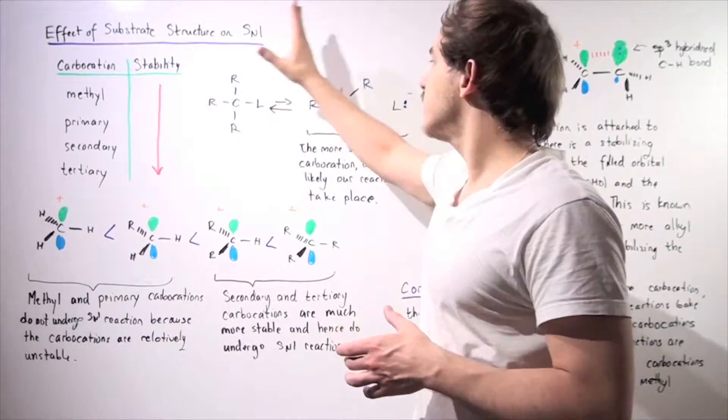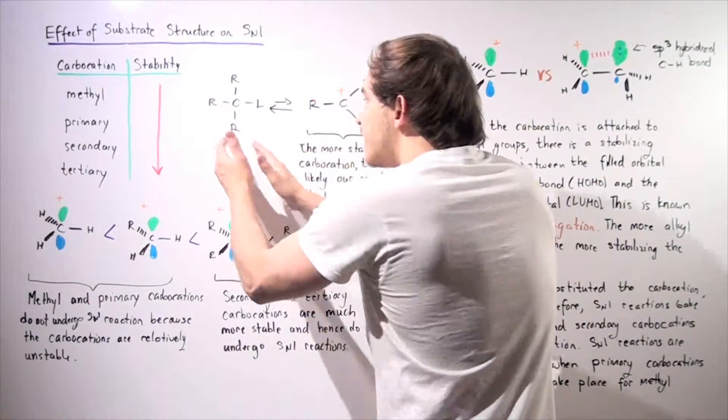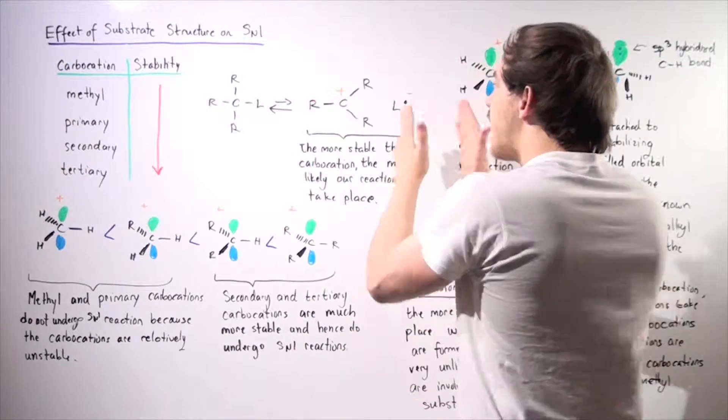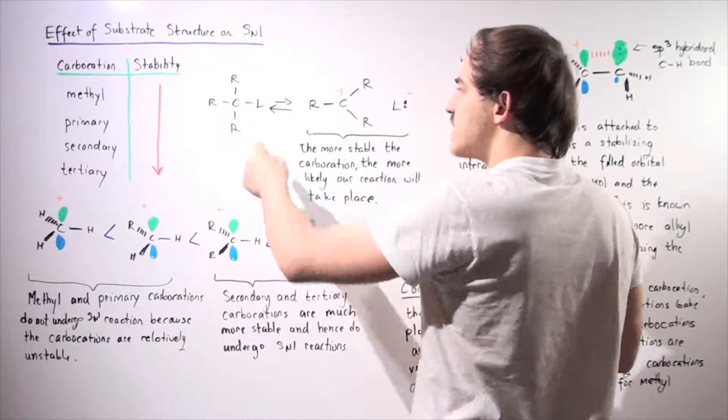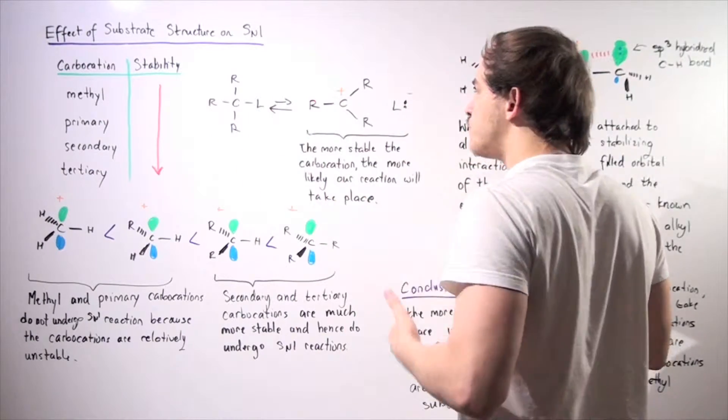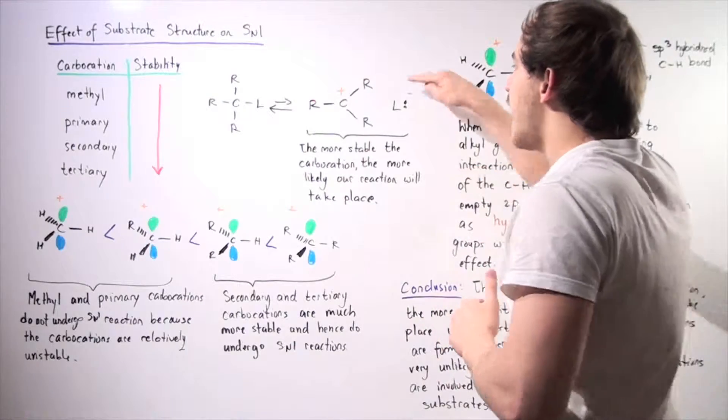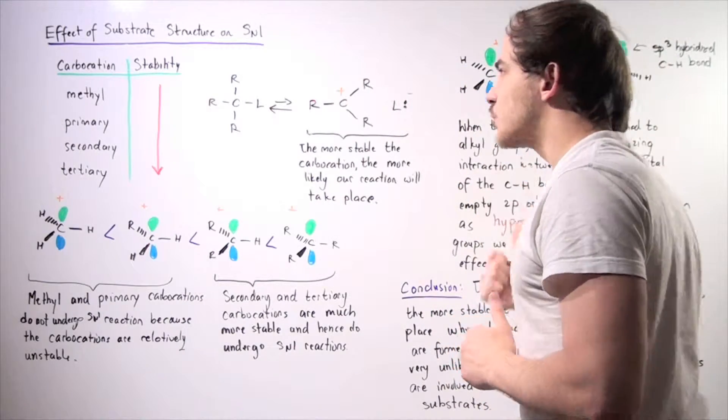So let's begin by looking at the following ionization step. We have a substrate that dissociates into a carbocation and a leaving group. This pair of electrons simply goes onto our leaving group, forming the following positively charged carbocation and negatively charged leaving group.